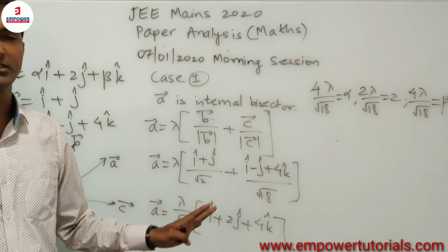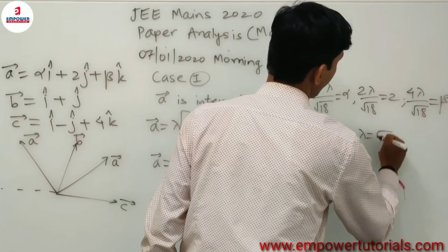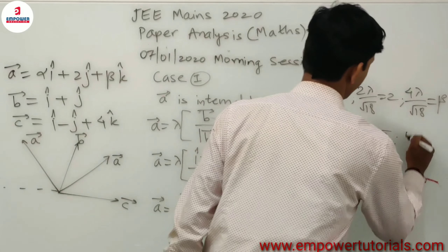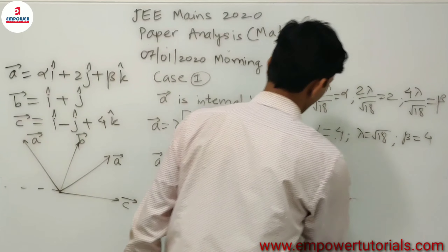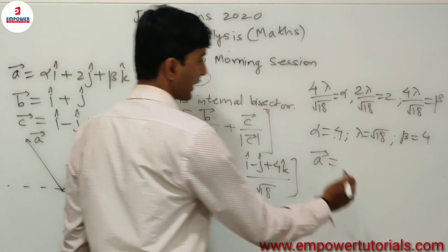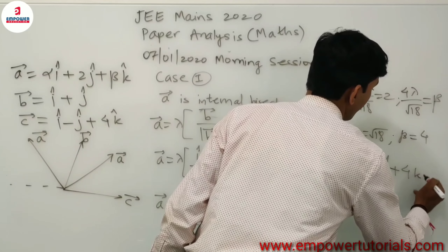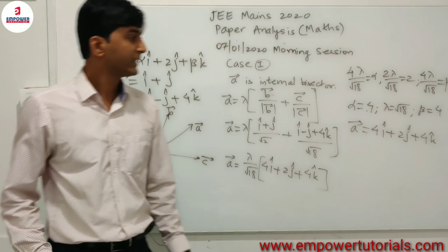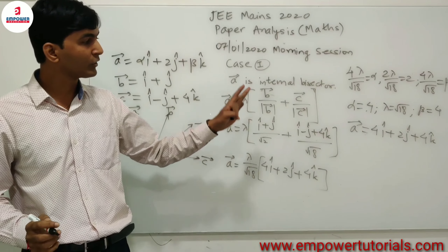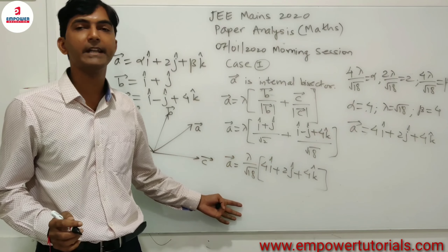Solving these equations gives α = 4, λ = √18, and β = 4. So **a** becomes 4î + 2ĵ + 4k̂. Checking against the given options for the dot product of **a** with î and k̂, none of the options are satisfied by this result, so we move to Case 2.